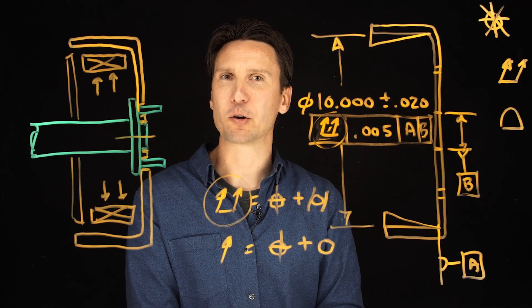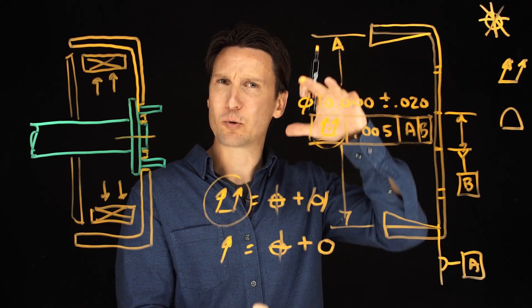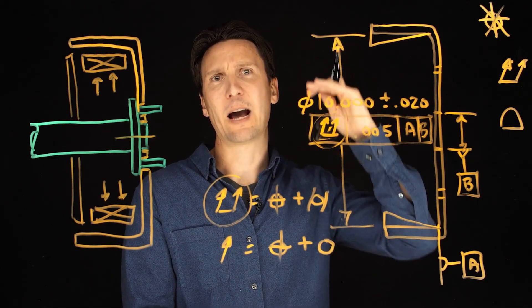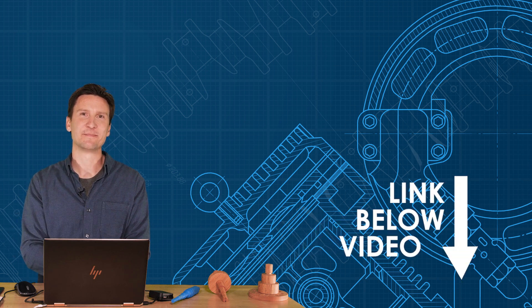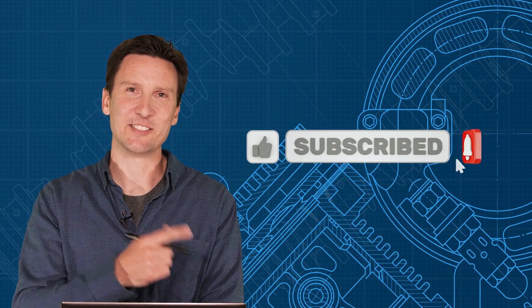So that's I think a good example for a total runout where the size doesn't really matter, but the runout has to be very good. It needs to run true no matter what size it is. Well hopefully that application helps. Sometimes seeing those practical things really helps bring these things together. And for more practical examples and lots more explanations, please see our GD&T online fundamentals program that I've linked in the description below. Thanks for the likes and subscribes and see you next time.